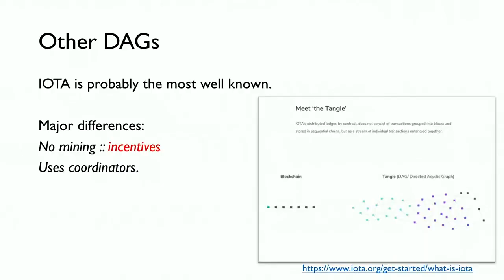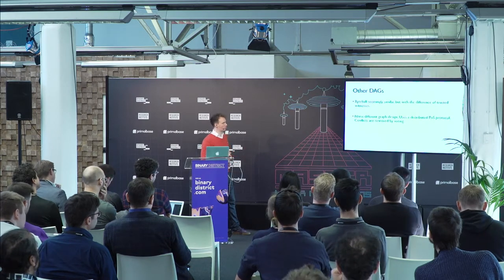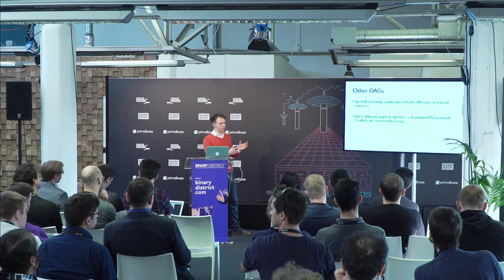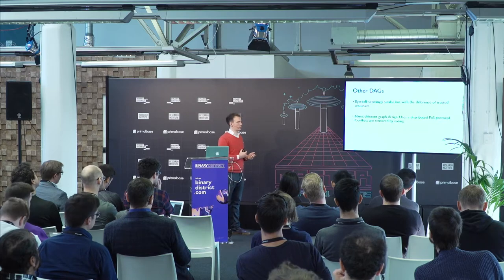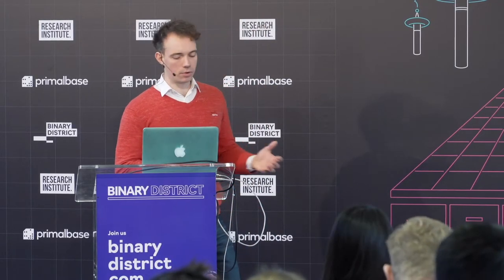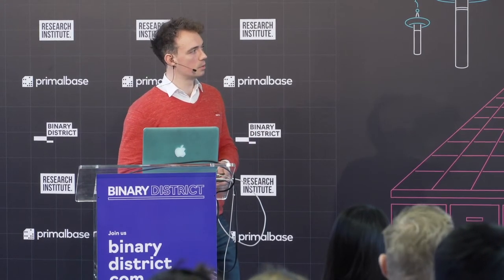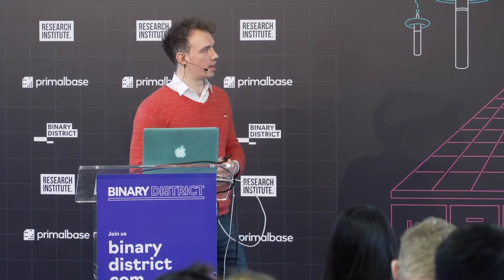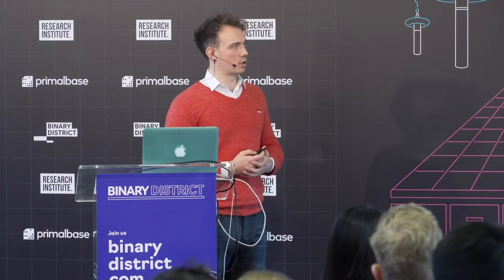There are other DAG systems out there you may have heard of. IOTA is probably the most well-known — it had a significant market value for a while. Major differences: there's not really any incentive structure, and they're currently using coordinators. Their website uses diagrams very similar to what I've just presented. Other implemented systems are Byteball — seemingly similar but with a difference involving trusted witnesses — and Nano, which uses a distributed proof-of-stake protocol where conflicts are removed by voting. Both are really cool systems with pros and cons. Our framework tries to be a bit more agnostic and more decentralized.